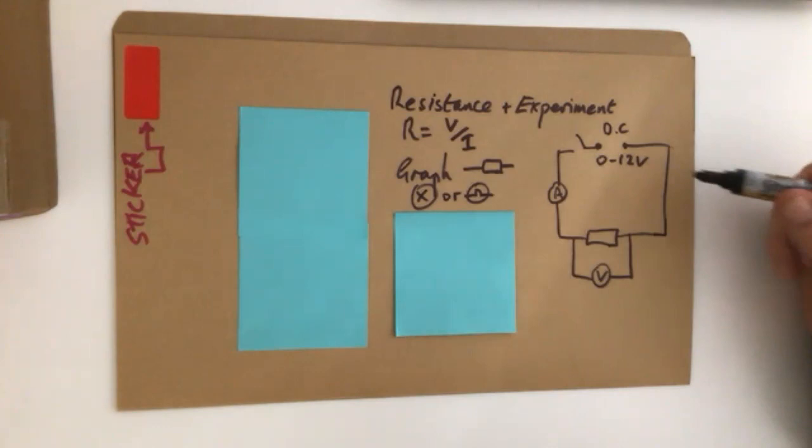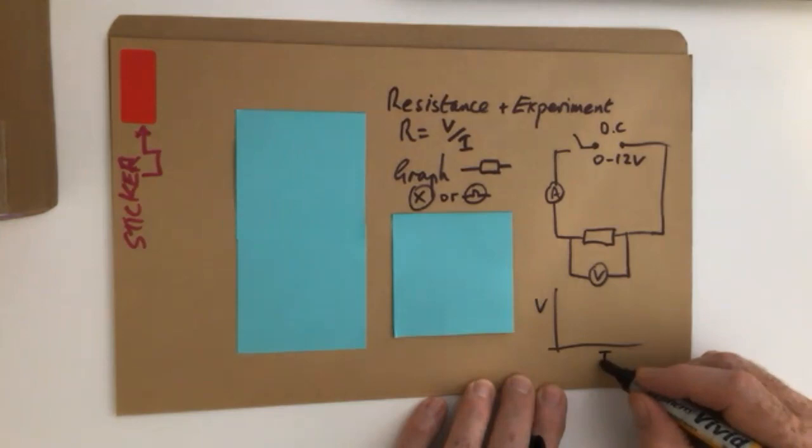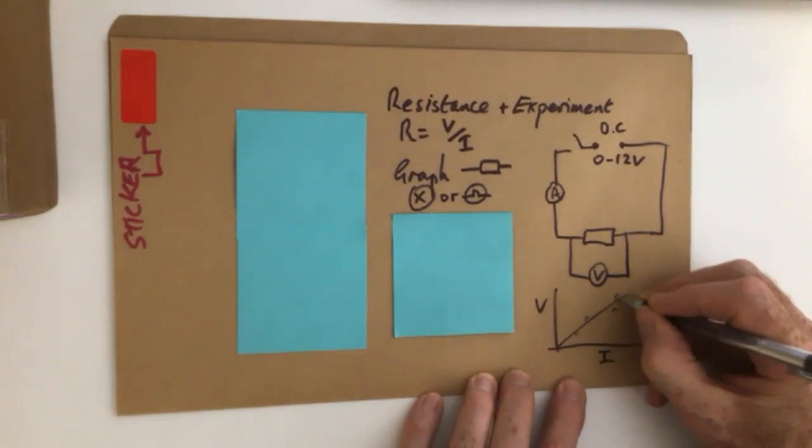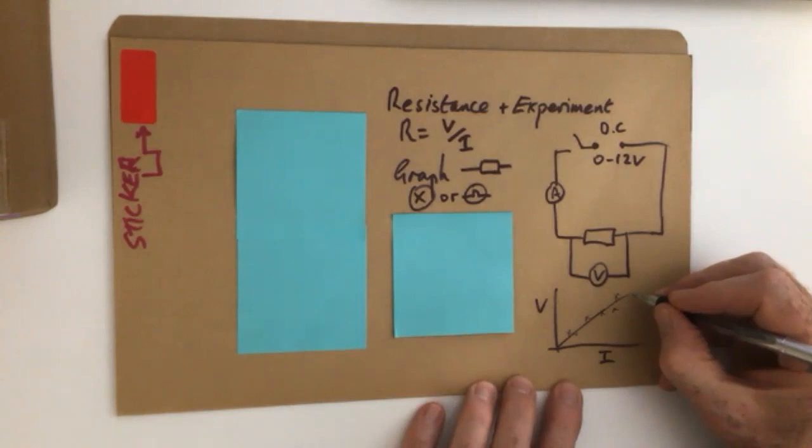And all we're going to do is we're going to switch it on, change the value on our power supply to six different readings. Drop down the data, plot a graph. Once we've got the data, we plot V against I. And it should be a straight line. Now, to do this nice and scientifically, you could do it three or four times for each reading. The more data we put on here, the better it gets. And don't expect everything to be on the line, guys. That's just unrealistic.